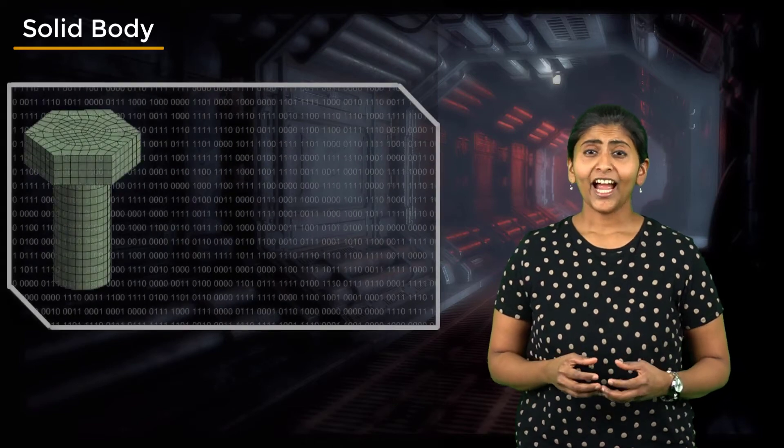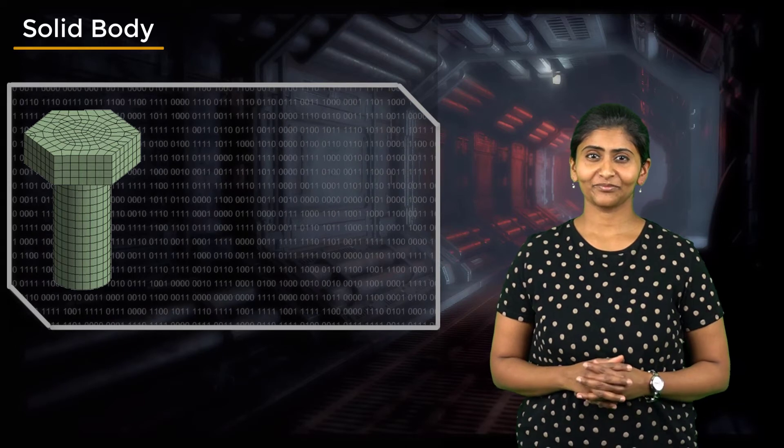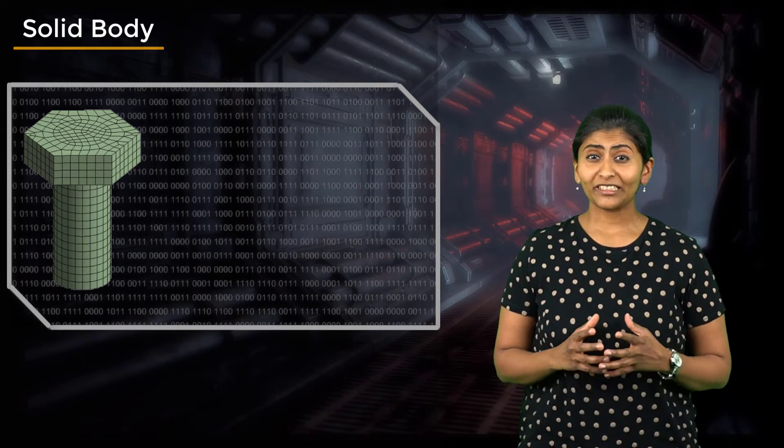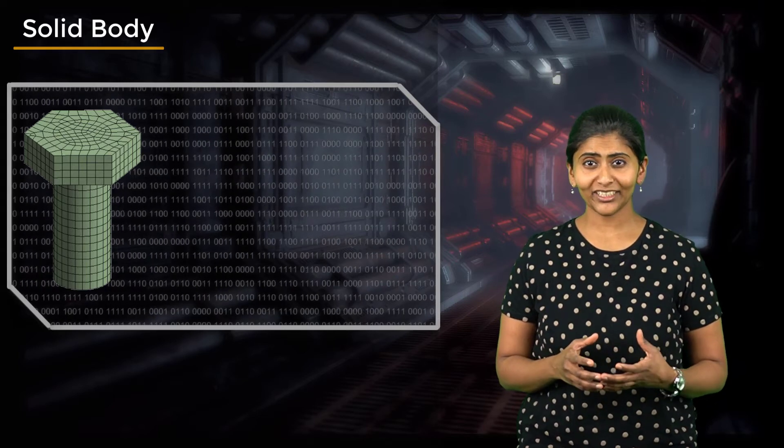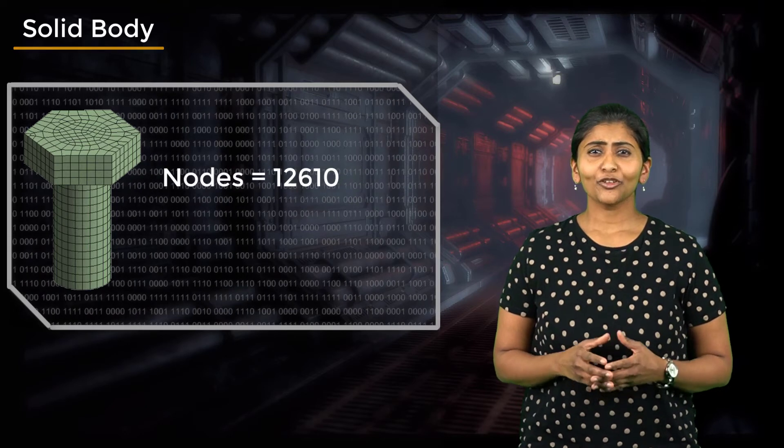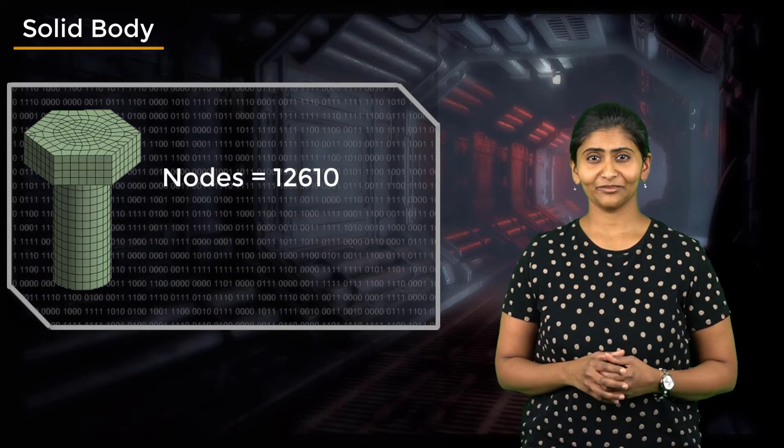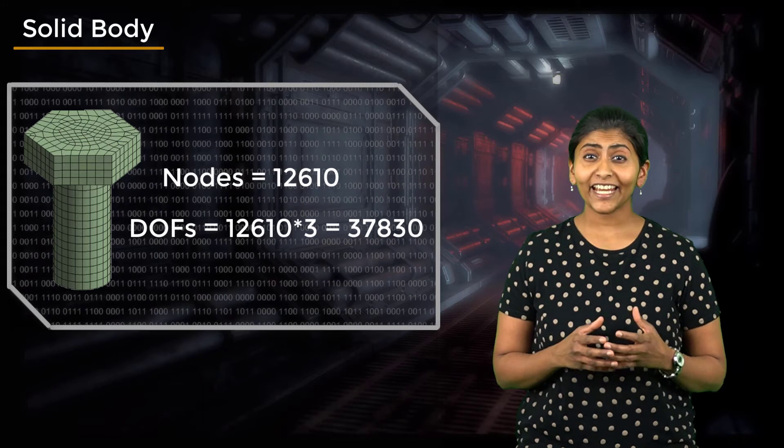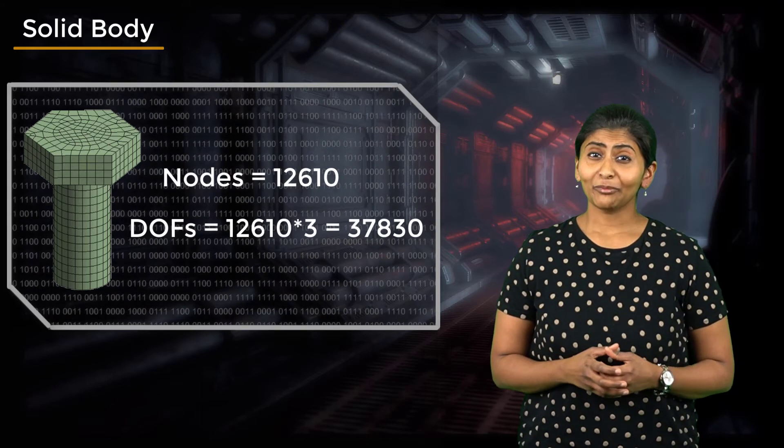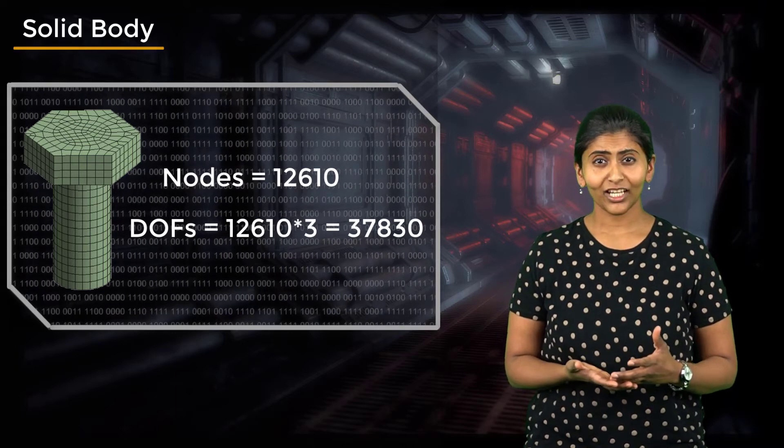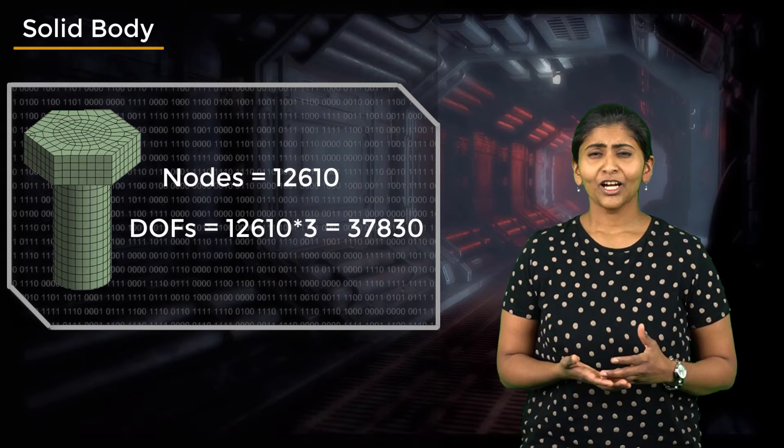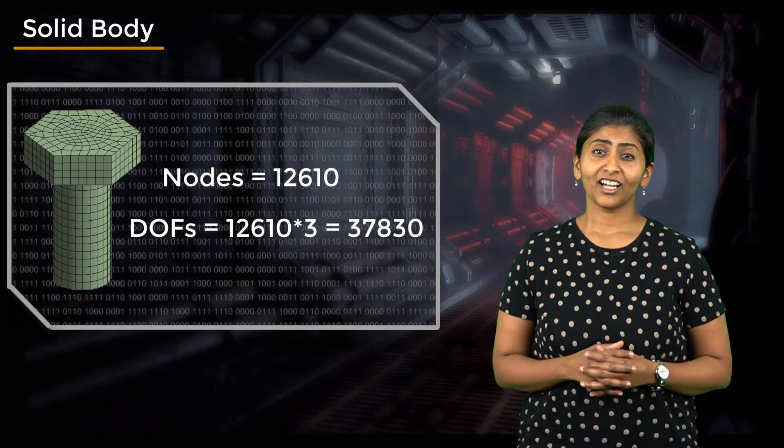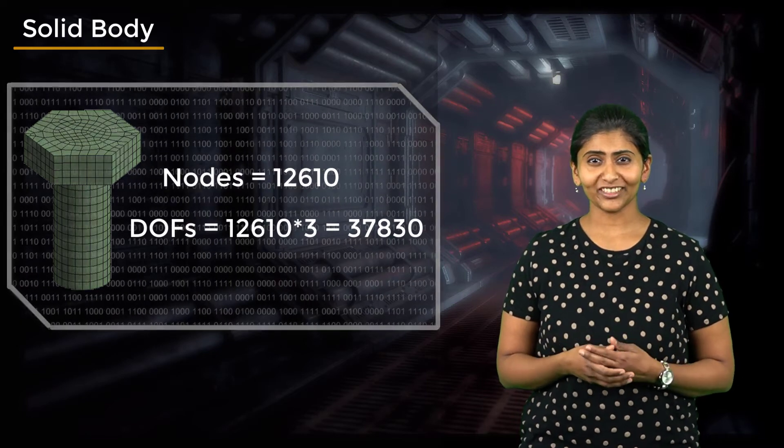Let's look at an example in which the bolt is modeled as a solid body and meshed with solid elements in Workbench Mechanical. If the length of the bolt is about 60 mm and meshed with hexahedral elements of size 3 mm, the total number of nodes is about 12,600. Since each node has 3 degrees of freedom, the bolt has 37,800 degrees of freedom in total. If a machine assembly has a large number of bolts, the total number of equations to be solved could become very large. The system will require larger computer resources and longer computational time to calculate the solution.